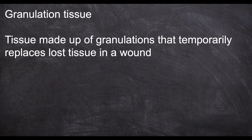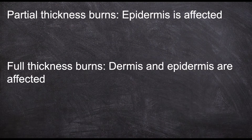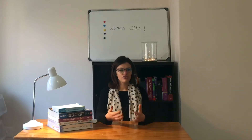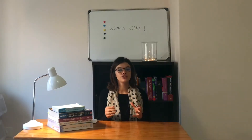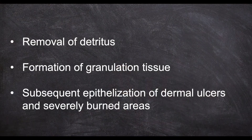Granulation tissue temporarily replaces the lost tissue in the wound. A partial thickness burn is when the epidermis is affected, and a full thickness burn is when the epidermis and the dermis are affected. Collagenase is an enzyme produced by Clostridium histolyticum and its action is highly specific to denatured collagen in necrotic tissue, making it effective for the removal of detritus, formation of granulation tissue, and epithelialization of dermal ulcers and severely burnt areas.